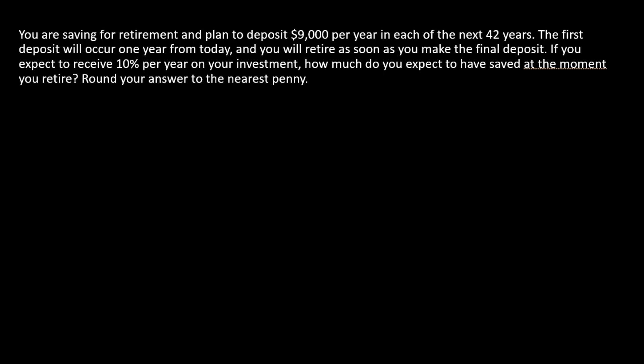Here we have a very common retirement problem. The idea is you've got a client or someone who is going to make a regular deposit into some account. It's going to earn some expected return over time, and at the end of some series—here it's going to be 42 years, approximately a working life—you're going to look and see how much money you have for retirement. In this case, the deposit is going to be $9,000. There will be 42 of these, and the first one will happen one year from today.